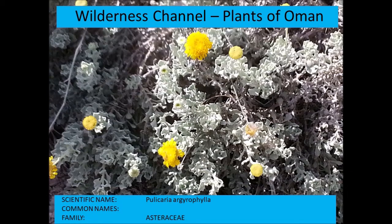Pulicaria argyrophylla — argyrophylla referring to the silvery-like leaves. It has yellow flowers of the daisy family Asteraceae, with the typical composite inflorescence structure of daisies.